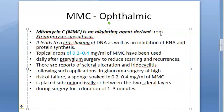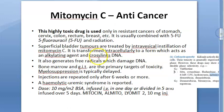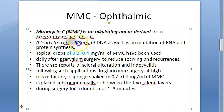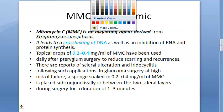Mitomycin C leads to cross-linking of DNA and inhibition of RNA and protein synthesis — the same mechanism seen in its anti-cancer action. For ophthalmic use, the dose to remember is 0.2 to 0.4 mg per mL. This is the topical drug dose used in ophthalmic surgeries.